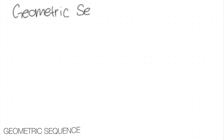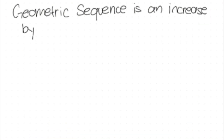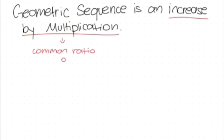Now we have the geometric sequence. The geometric sequence is an increase by multiplication. This is called the common ratio, symbolized by the letter R. Its general formula is: A sub n is equal to A sub 1 times R, raised to the power of n minus 1.